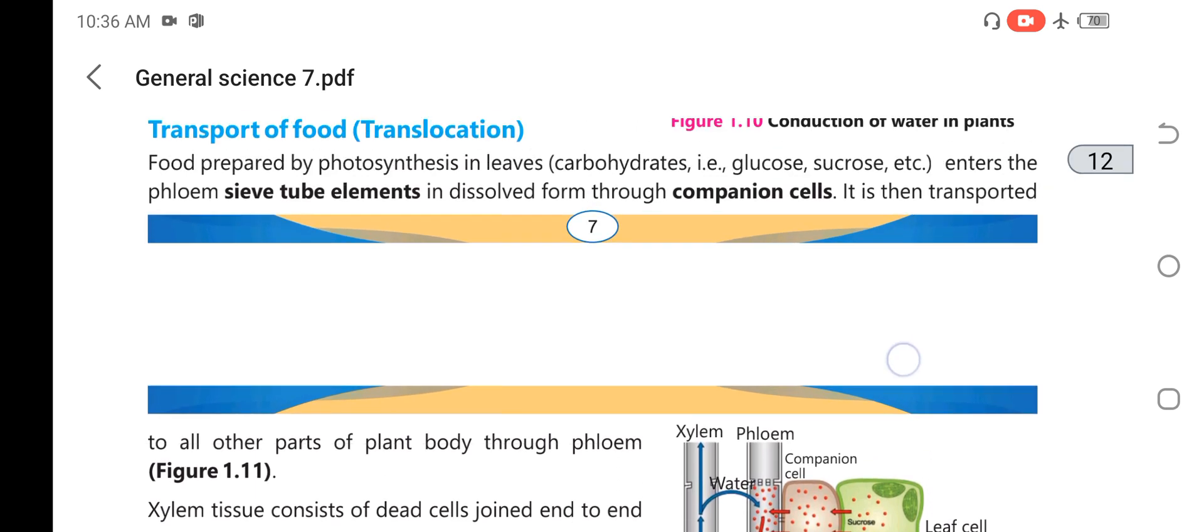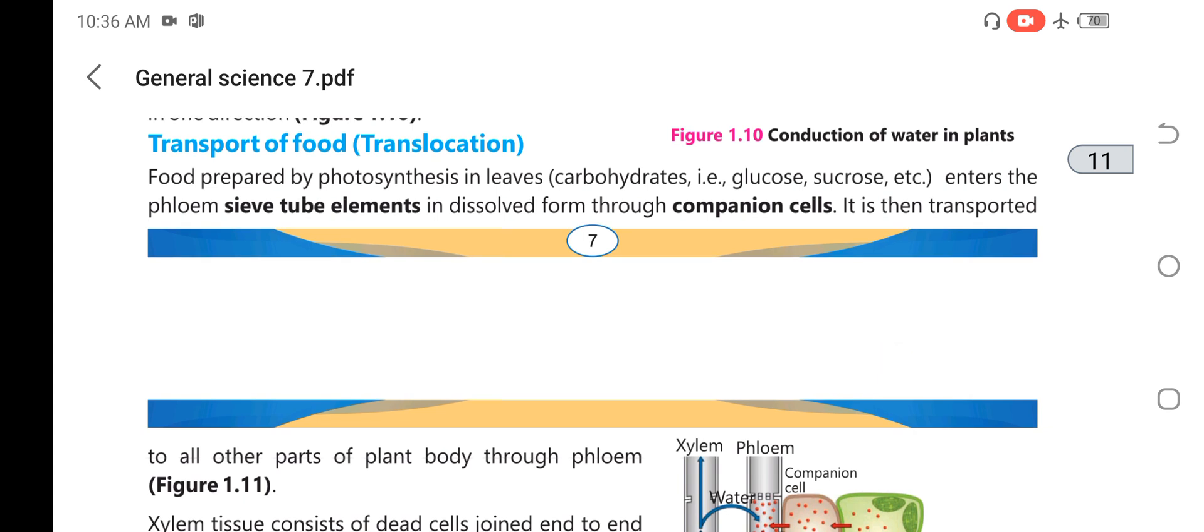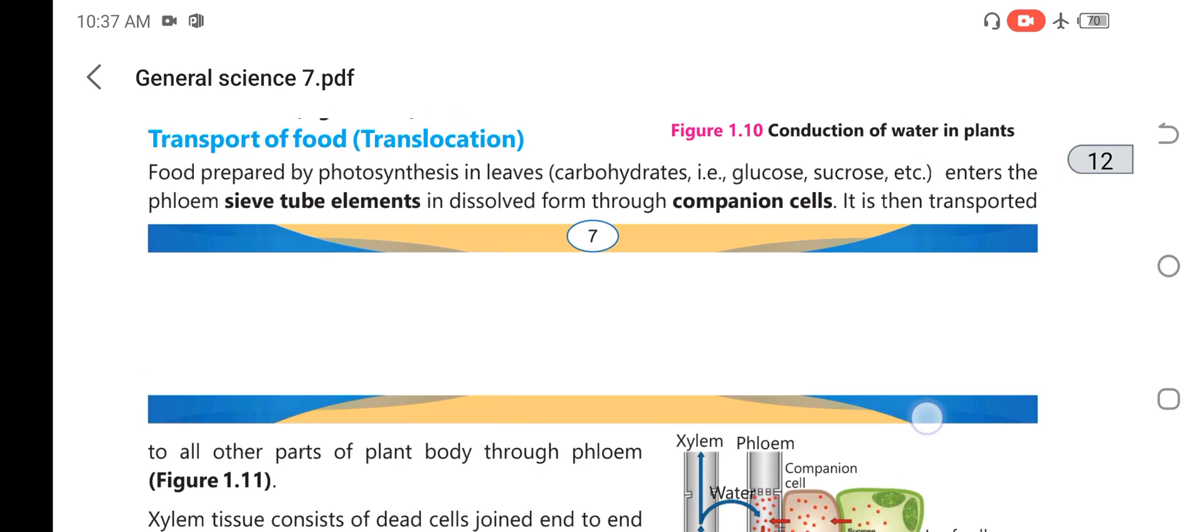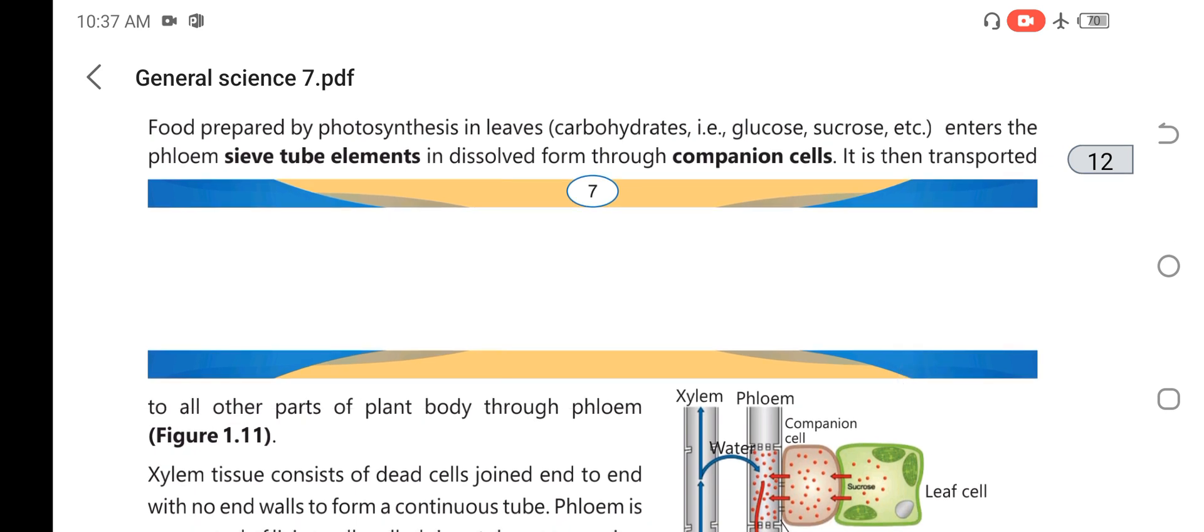Transport of food is also called translocation. Food prepared by photosynthesis in leaves, like carbohydrates, glucose, and sucrose, enters into the sieve tube elements in dissolved form through companion cells. It is then transported to all parts of the plant body through phloem tissues.